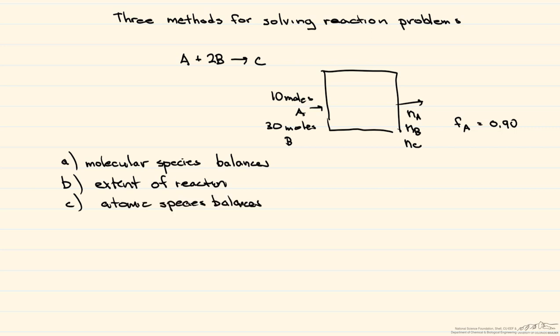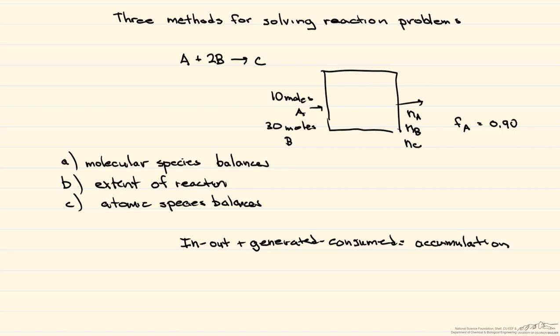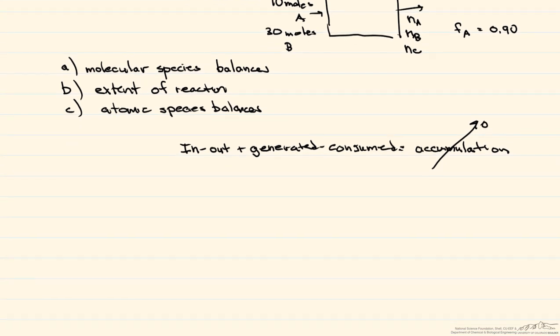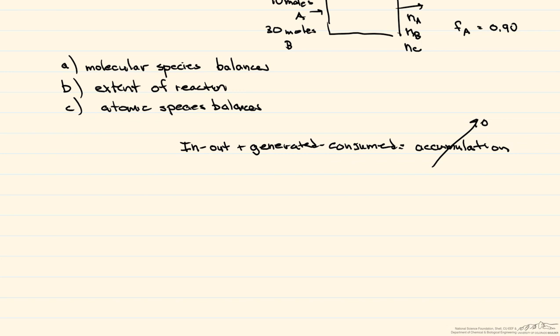All of these use the general material or mass balance: mass in minus mass out, plus mass generated minus mass consumed, is equal to the accumulation. Since we're going to consider this a steady-state process, the accumulation term is equal to zero. So we write this as: N_out of any species equals the amount in plus the amount generated minus the amount consumed.